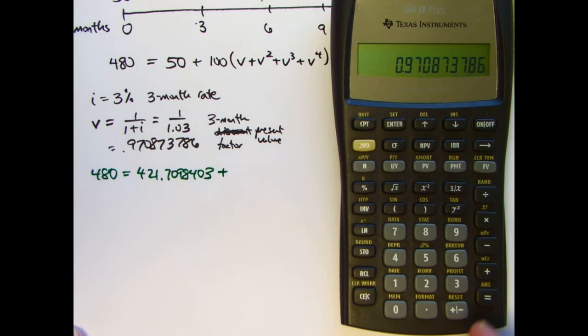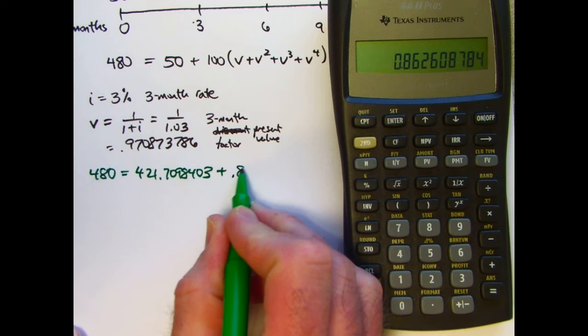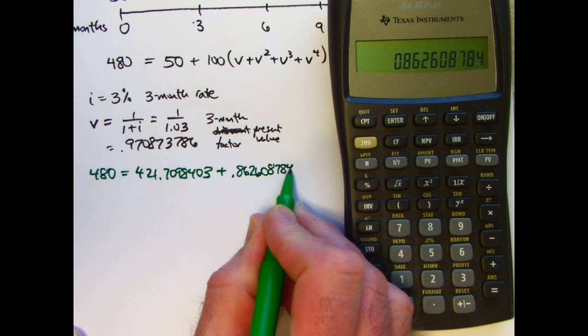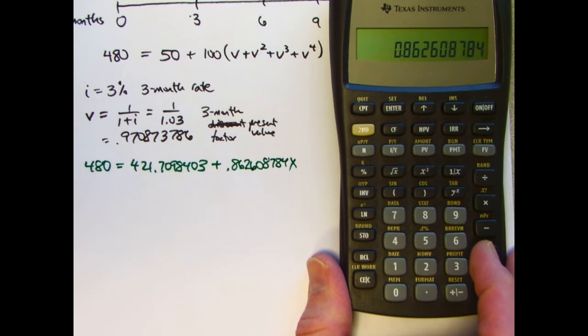0.862608784 times X. Solve this for X. So I need to subtract 421.709 from both sides. I get 480 minus 421.7098403.